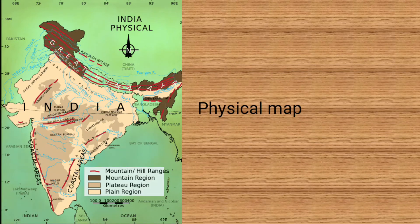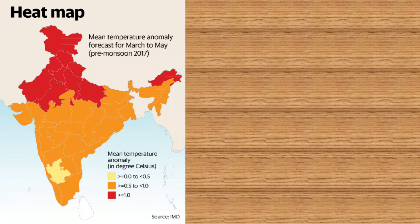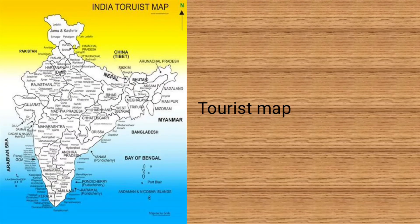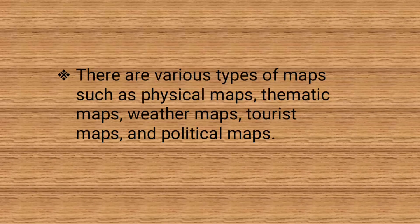It is a physical map. It is a thematic map. It is a political map. There are various types of maps such as physical maps, thematic maps, weather maps, tourist maps and political maps.